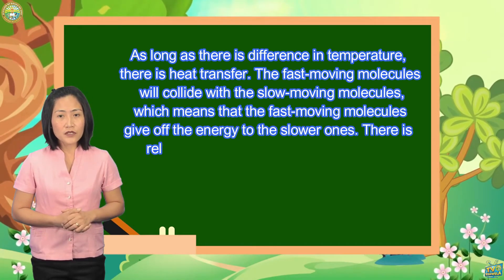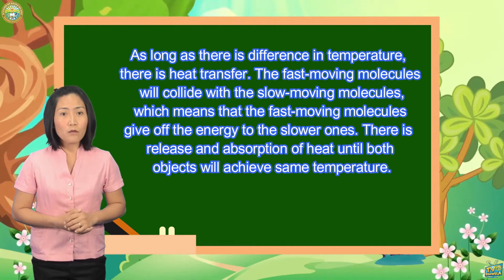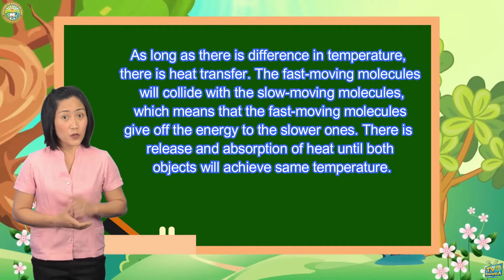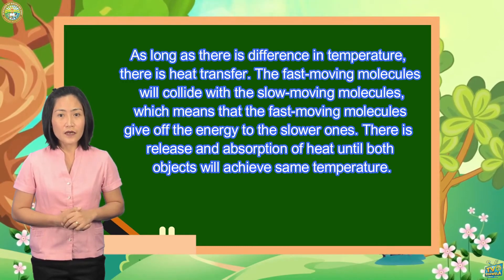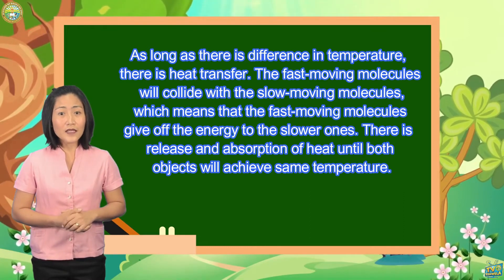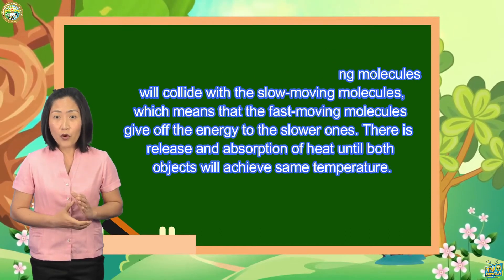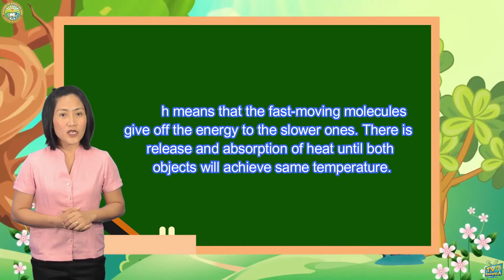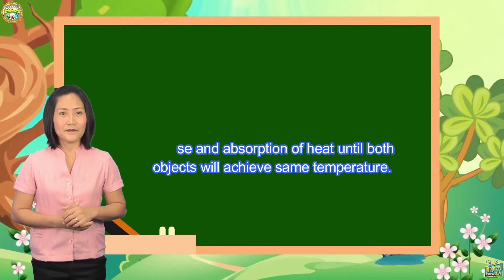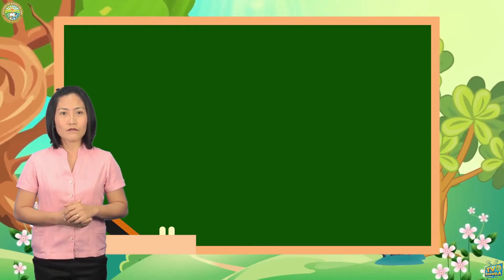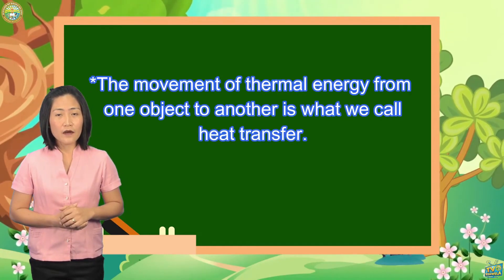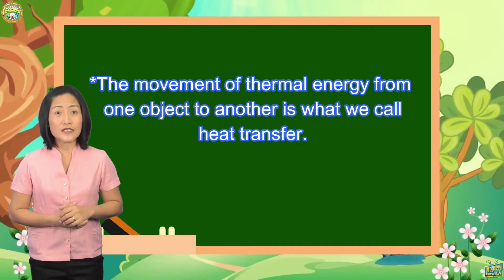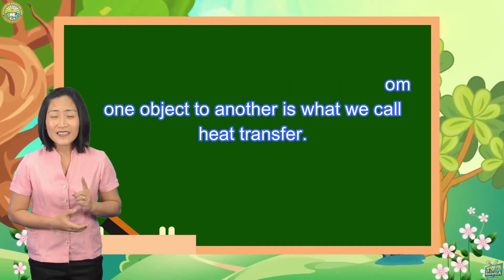The fast-moving molecules will collide with the slow-moving molecules, which means that the fast-moving molecules give off energy to the slower ones. There is release and absorption of heat until both objects achieve the same temperature. The movement of thermal energy from one object to another is what we call heat transfer.